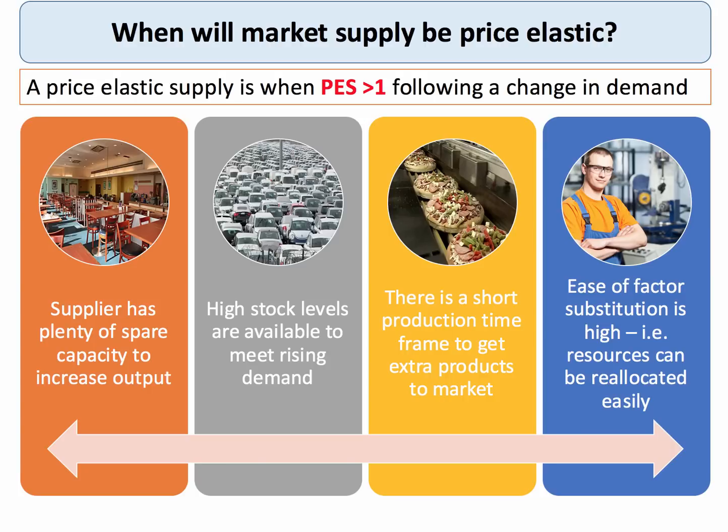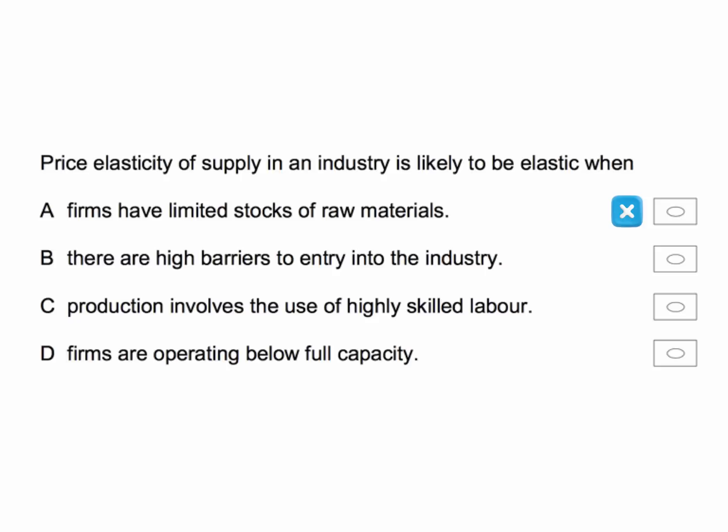Let's go back to our question and work through the options. Option A: firms have limited stocks — no, when stocks are low, supply will be inelastic. Option B: high barriers to entry — no, that's incorrect because high barriers to entry will limit the number of new firms that could come into the industry, for example when there's a rise in demand.